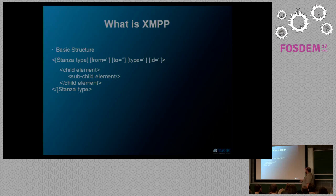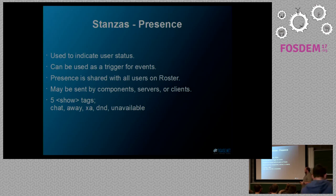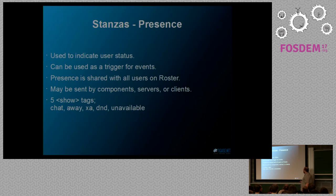The basic structure of a stanza will have a type, usually a from or a to, and related child elements. Moving on to stanza types, you have presence. This can indicate a user status — whether they're away, unavailable, or available for chat. They can be used as triggers for events, so if somebody signs off, some other logic happens inside the server. They can be sent by servers, clients, or components.